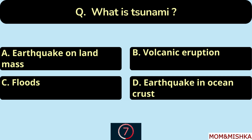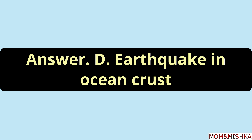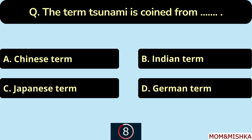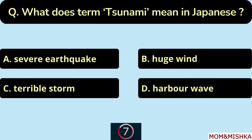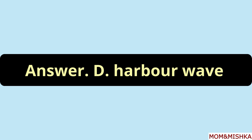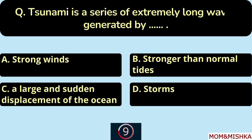What is a tsunami? It is an earthquake in the ocean crust — option D. The term tsunami is coined from the Japanese term — option C.